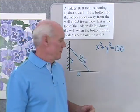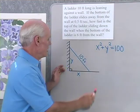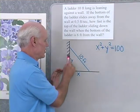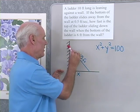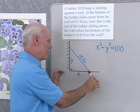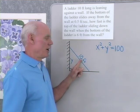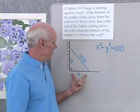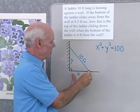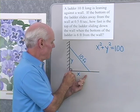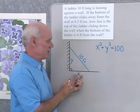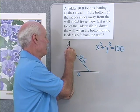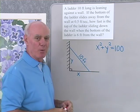Here I've drawn a little picture of the situation. Here is the ground, here is the wall. The ladder is leaning against the wall and the ladder is 10 feet long. I've labeled the distance the ladder is from the wall with x, and the distance the ladder is up the wall with y.